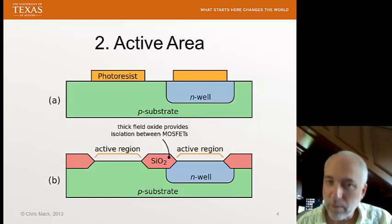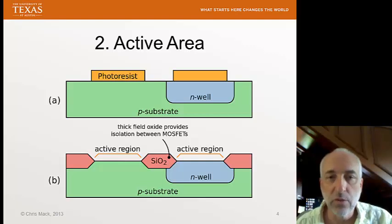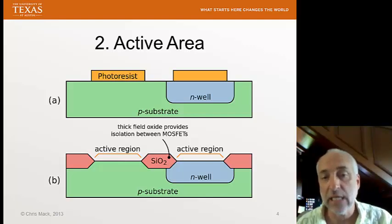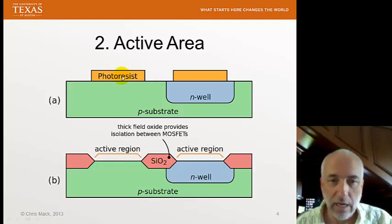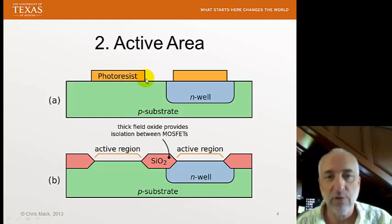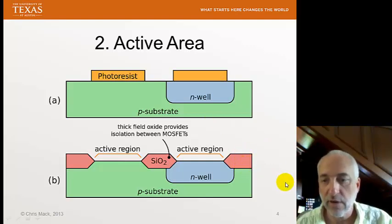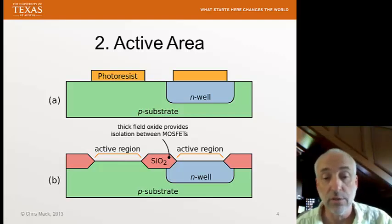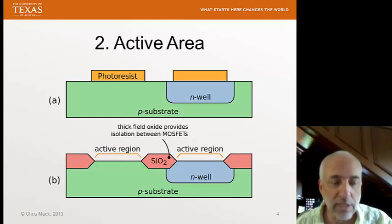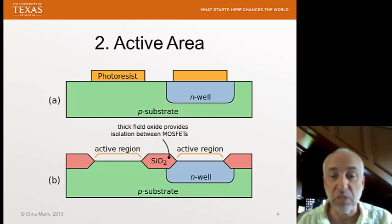Then we're going to create our active areas. Creating an active area means we're going to grow oxide in the regions where we don't want a transistor — this oxide acts as isolation between the various active areas. We'll form a pattern in photoresist, which transfers into a nitride layer that blocks the formation of oxide in the protected areas. Everywhere that's not protected forms an isolation area. This process is called LOCOS — local oxidation of silicon. There's also a more important process today called shallow trench isolation, or STI. They have the same function: they create isolation regions between the active areas where we're going to build our transistors.